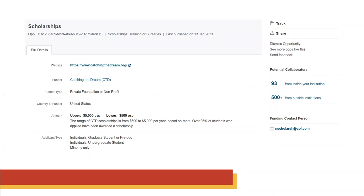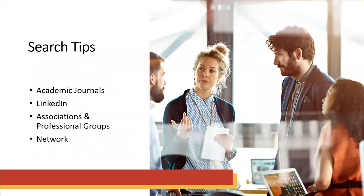Within Pivot-RP itself, you can track grants, share information, or find potential collaborators. Since this is a university-wide tool, you can see potential collaborators here at UDC. When it comes to finding funding, there are general tips using these tools and finding funding elsewhere. It helps to be expansive. Keep an eye on academic journals in your area of interest — they often put out calls for proposals or even offer funding themselves. Consider being active on LinkedIn; this is a great way to stay on top of funding options and find potential collaborators.